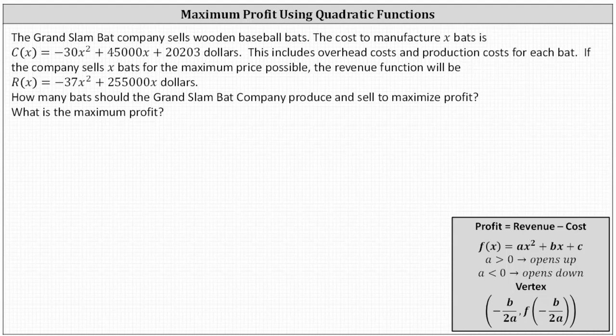The Grand Slam Bat Company sells wooden baseball bats. The cost to manufacture X bats is given by C of X dollars. This includes overhead cost and production cost for each bat. If the company sells X bats for the maximum price possible, the revenue function will be given by R of X dollars. How many bats should Grand Slam Bat Company produce and sell to maximize profit, and what is the maximum profit?